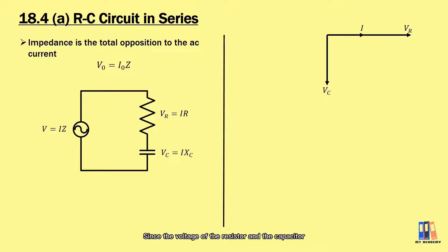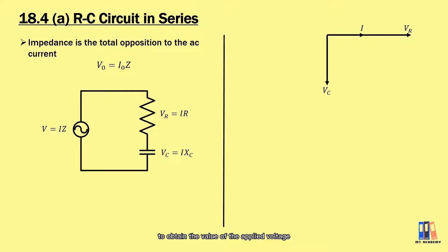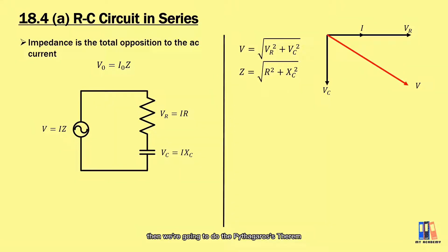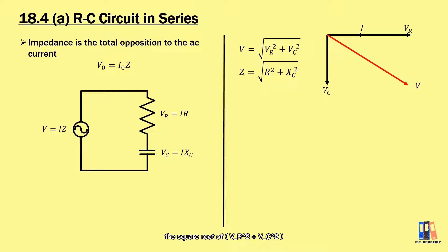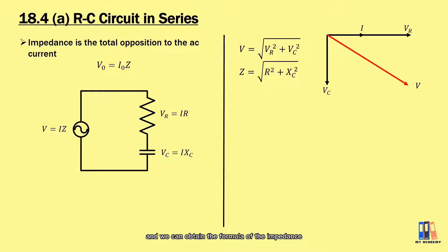Since the voltage of the resistor and the capacitor are not in phase, you cannot just add the two of them directly to obtain the value of the applied voltage. Instead, we are going to treat them like vectors and apply the Pythagorean theorem to obtain the magnitude of the applied voltage, which is equal to the square root of VR squared plus VC squared. Since the current in a series circuit is the same for each component, we can divide the equation by the current and obtain the formula: impedance Z equals the square root of R squared plus XC squared.